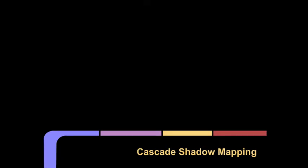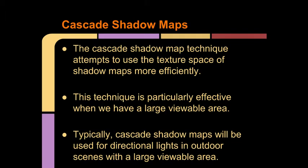Hello! In this video we will be discussing the shadow mapping technique called cascade shadow mapping. This is a technique that can be used to both improve quality and reduce the needed size of shadow maps for large view distances. Cascade shadow mapping attempts to use the shadow map texture space more efficiently, and will be particularly effective when a light has a very large viewable range, such as a directional light and a camera with a large far clip.